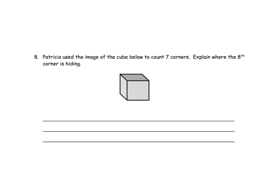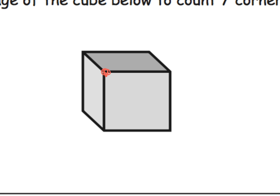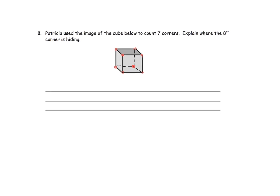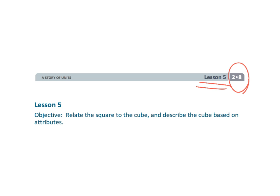The last slide: Patricia used the image of the cube to count seven corners. Explain where the eighth corner is hiding. We're going to zoom in, and we can see why somebody would say there's seven corners — one, two, three, four, five, six, seven. That's why Patricia is thinking there's seven corners to this cube. But we need to know that there is this back corner, which is kind of behind the cube — there is the corner that is kind of hiding. And so that's how we know that there's actually eight corners. That wraps up second grade module 8, lesson 5 — we are relating the square to the cube.